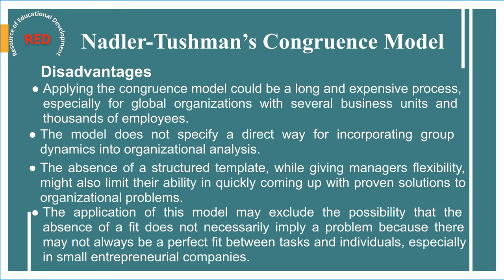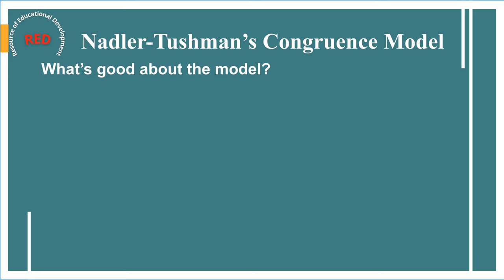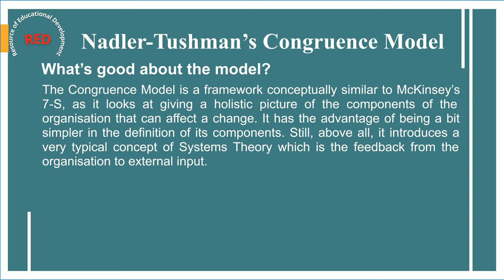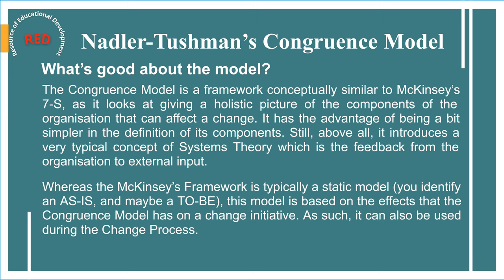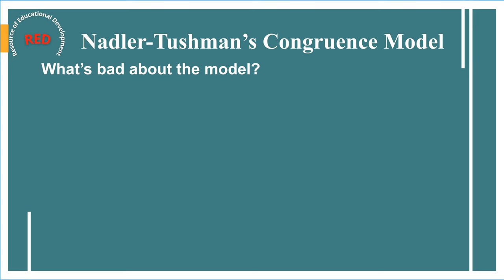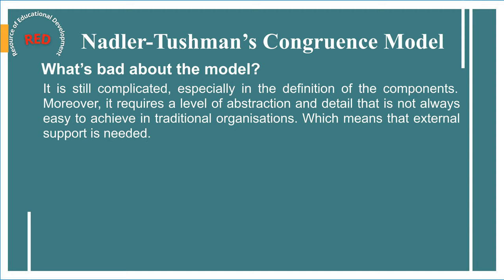What's good about the model: the congruence model is a framework conceptually similar to McKinsey's 7S, as it gives a holistic picture of the components of the organization that can affect change. It has the advantage of being a bit simpler in the definition of its components. Above all, it introduces a key concept from systems theory — feedback from the organization to external input. Whereas McKinsey's framework is typically a static model where you identify an as-is and maybe a to-be, this model is based on the effects congruence has on a change initiative and can be used during the change process. What's bad: it is still complicated, especially in defining components, and requires a level of abstraction and detail not always easy to achieve, meaning external support is often needed.